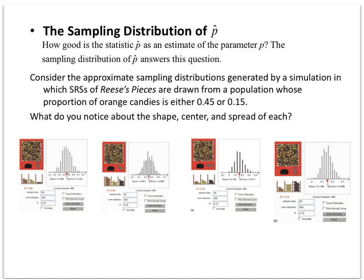Let's take a look at a situation where I'm taking simple random samples of Reese's Pieces candy, and we're going to look at the percentages of oranges in any particular bag. We're going to set it up so that P is either 0.45 or 0.15 — so either 45% or 15% of all the candies are orange — and we're going to see what our samples look like.